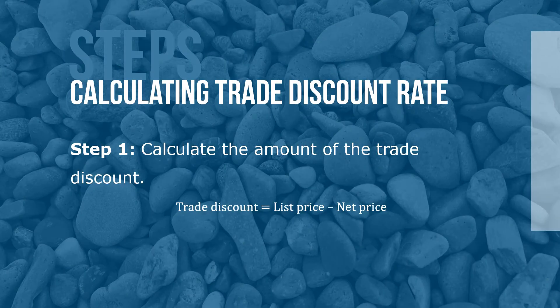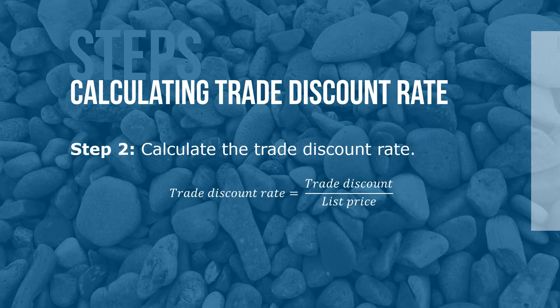Here are the steps to calculating the trade discount rate. Step 1: Calculate the amount of the trade discount. Remember, trade discount equals list price minus net price. Step 2: Calculate the trade discount rate. The trade discount rate equals trade discount over list price.